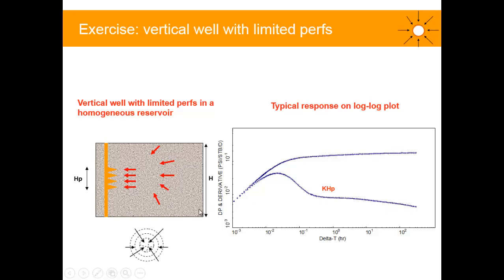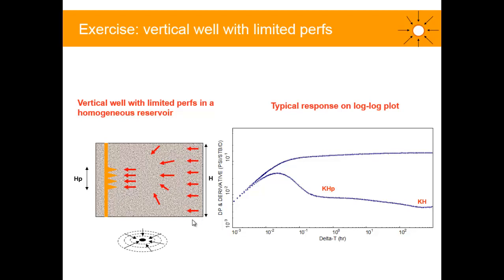Further away still, at large distances in the reservoir, the limited perforation acts as a sink equivalent to a vertical well fully perforated. We expect to see a radial flow regime across the entire net reservoir thickness H at large delta T — another stabilization. This late radial flow is indicative of KH. Since KH is higher than KHP, this stabilization level is lower, and this is the typical response for a vertical well with limited perforation.